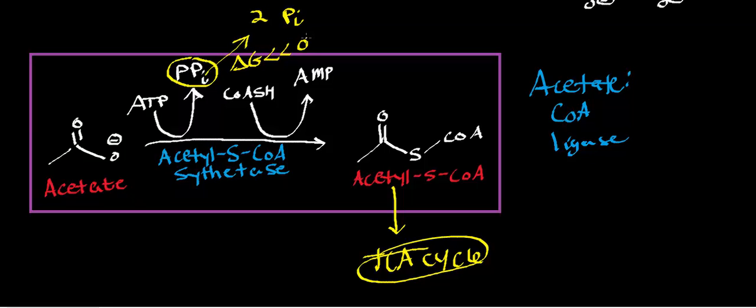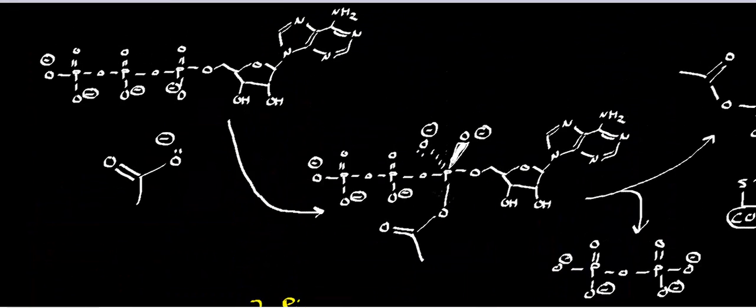Well then the second step of this reaction is we're going to use coenzyme A to ligate to the two-carbon fragment, and then we're going to lose that adenylate and we end up with this very important molecule, acetyl-CoA. Well in this video, we're going to look at the mechanism of this enzyme.